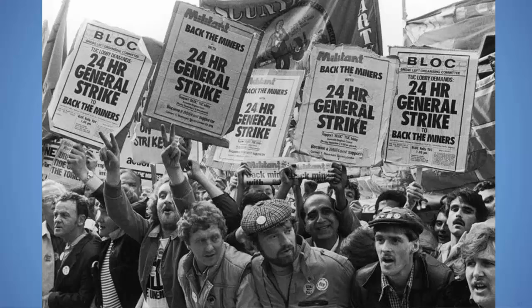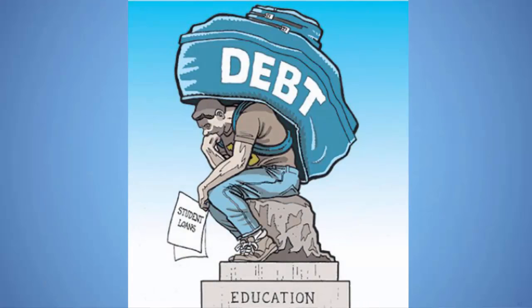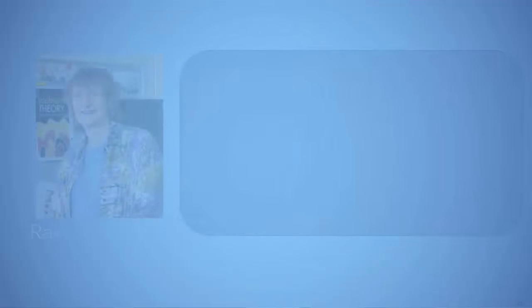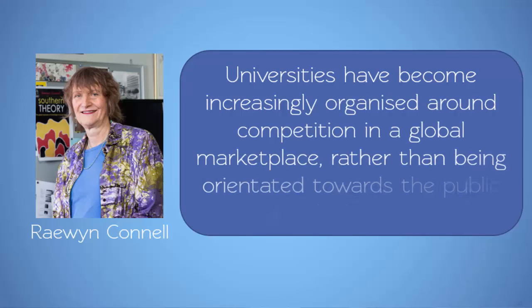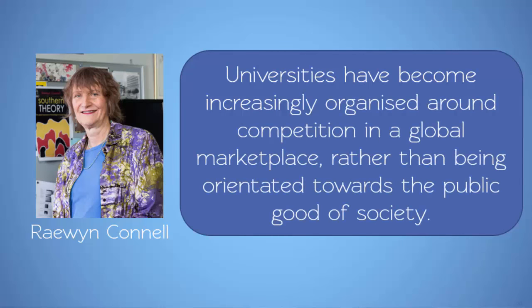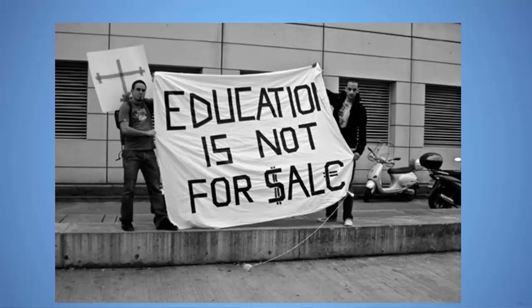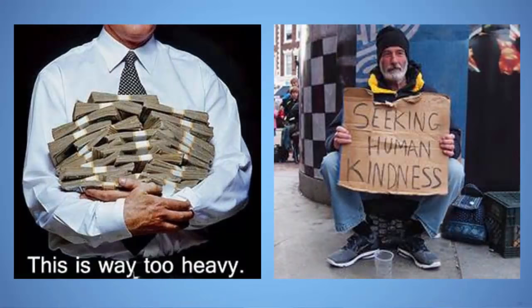The social impacts of neoliberalism have also been felt in Australia. Higher education is one example. Sociologist Raewyn Connell argues that since the Dawkins reforms of the 1980s, which included the introduction of fees for tertiary education, universities have become increasingly organised around competition in a global marketplace, rather than being orientated towards the public good of society. She contends that access to education has been commodified in Australia, as university degrees are now viewed not as an education, but as a commodity to be exported and sold, with their only benefit being improvement in graduates' earning capacity. By aiming to put a market price on all aspects of social life, neoliberal thinking has encouraged governments to value competition and profit above all else, and to weaken the role of other social principles such as altruism, cooperation and community.